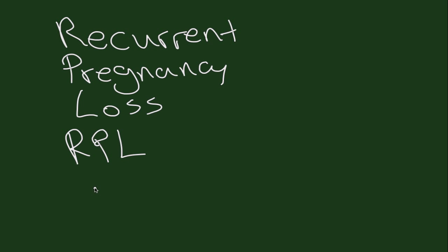The first thing we have to do is understand the definition of recurrent pregnancy loss, and it has changed over time. Currently, recurrent pregnancy loss is described as a patient who has had greater than or equal to two pregnancy losses in their history. It used to be three pregnancy losses, but now it's commonly referred to as anything greater than two.